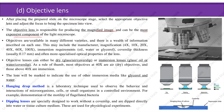Objectives are available in many varieties with information inscribed on each, including manufacturer magnification such as 4x, 10x, 20x, 40x, 60x, and 100x; immersion requirements such as oil, water, or glycerol; cover slip thickness of usually 0.17 mm; and specialized optical properties. Objective lenses can be dry — glass, air, and cover slip — or immersion lenses — glass, oil or water, and cover slip. As a rule, most objectives at 10x and 40x are air objectives, while those above 40x are immersion objectives, usually 100x.